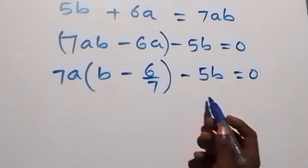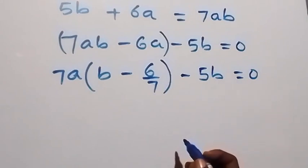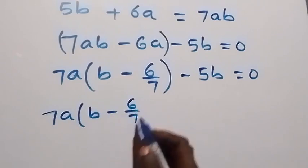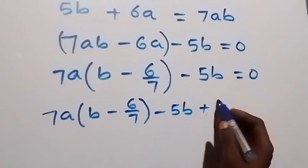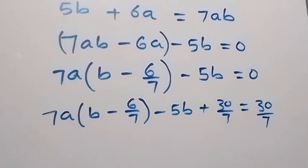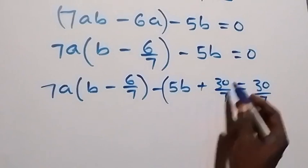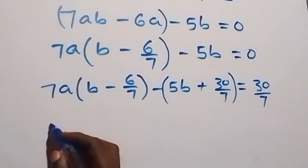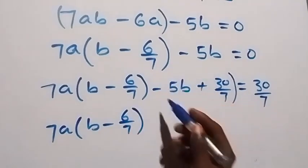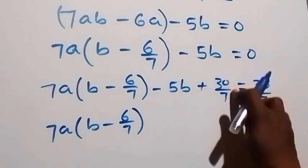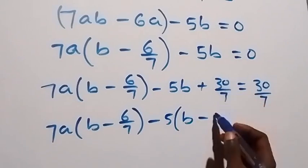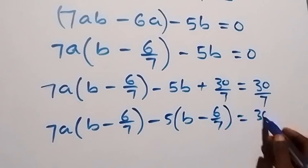Then we have 7a times (b minus 6/7) minus 5b equals zero. In order to get (b minus 6/7) on this side as well, let's add 30 over 7 to both sides. So we have 7a times (b minus 6/7) plus 30 over 7, which equals 30 over 7. Then factoring minus 5 from the remaining terms gives minus 5 times (b minus 6/7), equaling 30 over 7.